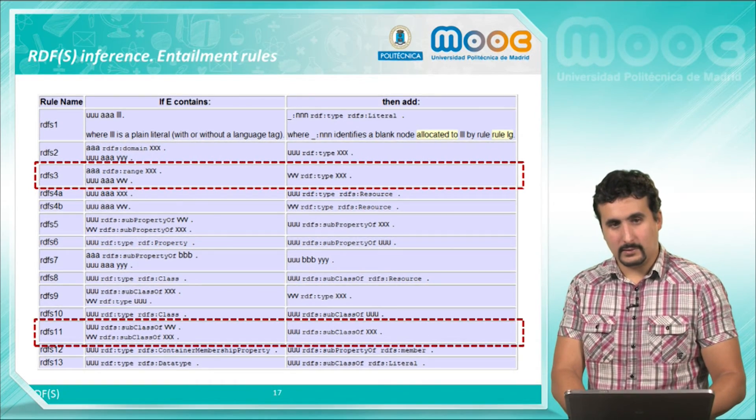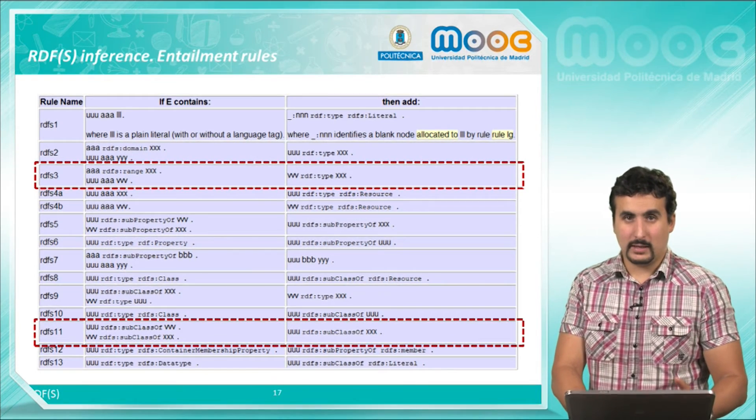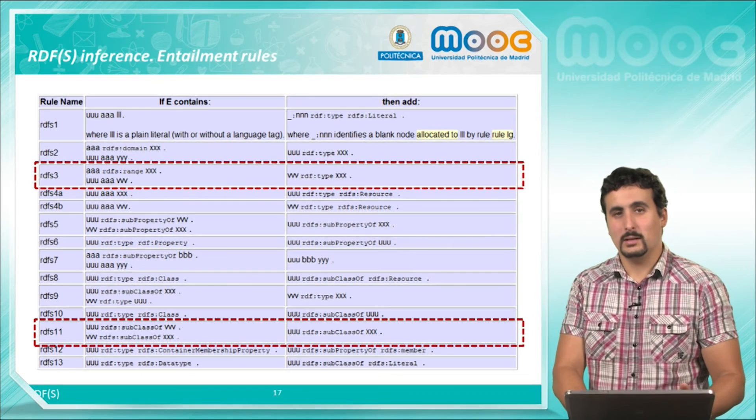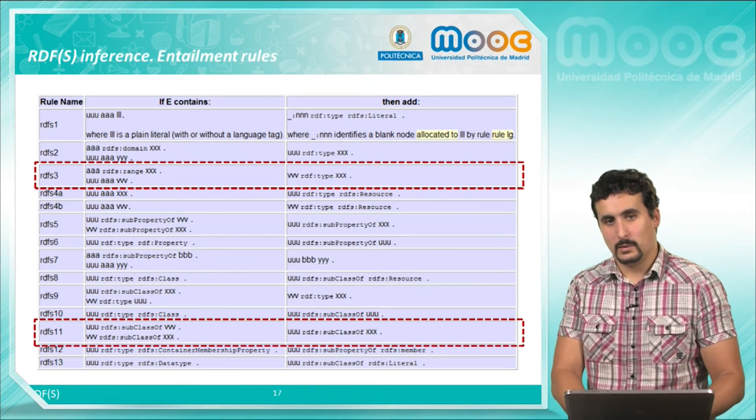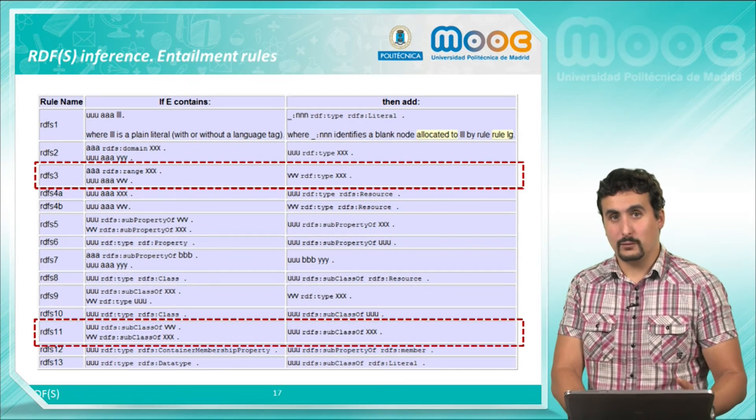Rule RDFS11 states that if U is a subclass of B and B is a subclass of X, then U must be a subclass of X. That is, the RDFS subclass property is a transitive one.